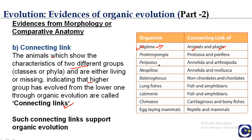Peripatus is a very important connecting link between Annelida and Arthropoda. It has unjointed legs and nephridia — these are the annelidan characters — and presence of antennae and a tracheal system for respiration, which are the arthropod characters. So Peripatus has characters of both arthropods and annelids. Neopilina is a segmented mollusk and is a connecting link between Annelida and Mollusca. Balanoglossus is a hemichordate and a connecting link between non-chordates and chordates. Lungfishes are a connecting link between fish and amphibians. Platypus is a connecting link — egg-laying, showing characters of both reptiles and mammals.